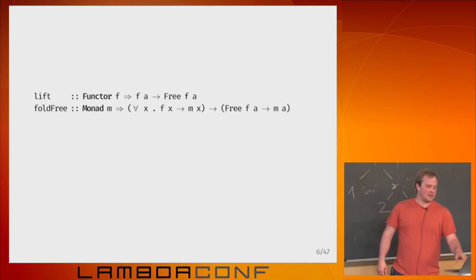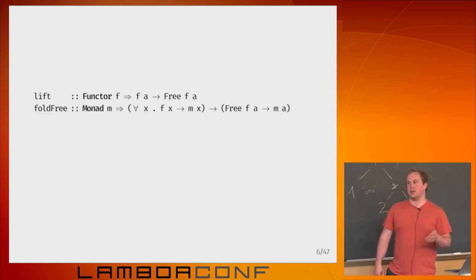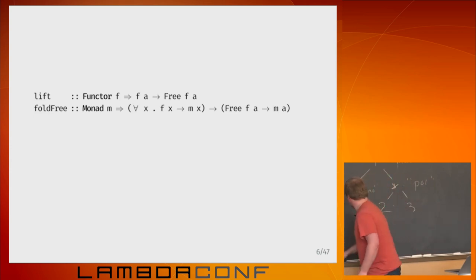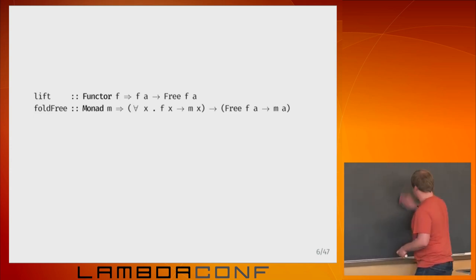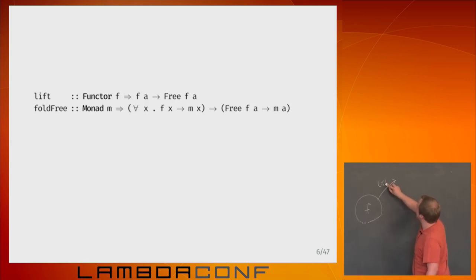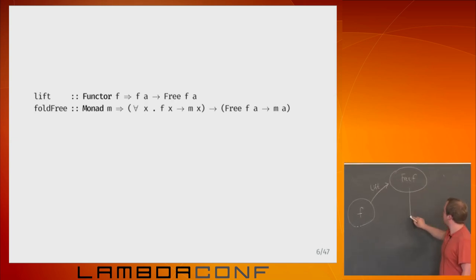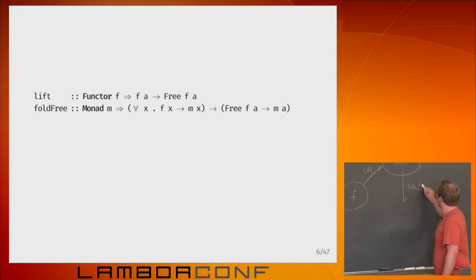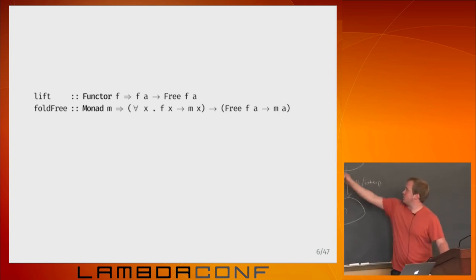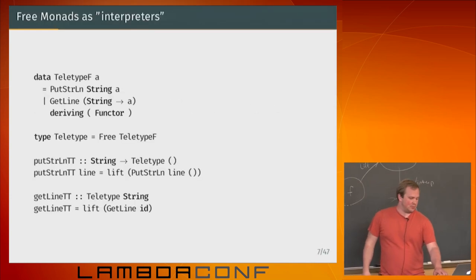Fold free says: if you have a free monad `Free f a`, it's a way of interpreting it into some monad `m a`. Free kind of exists in between functors and monads, allowing you to take a circuitous path — lifting things up into the free structure and then folding or interpreting them back down into monads.